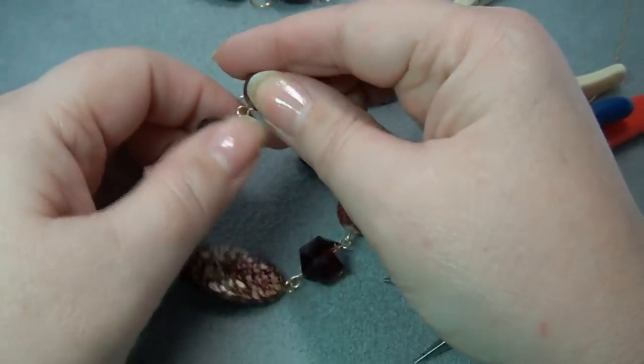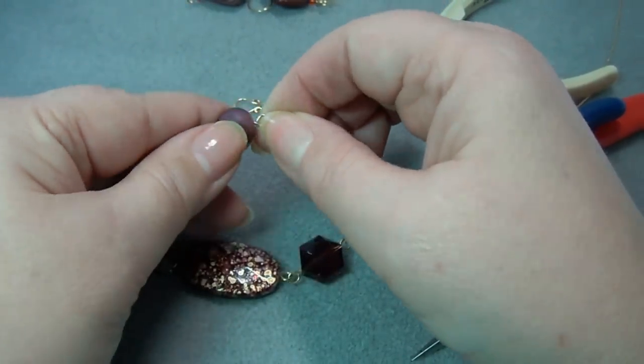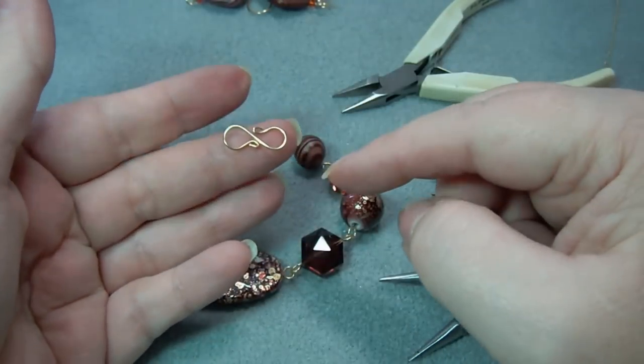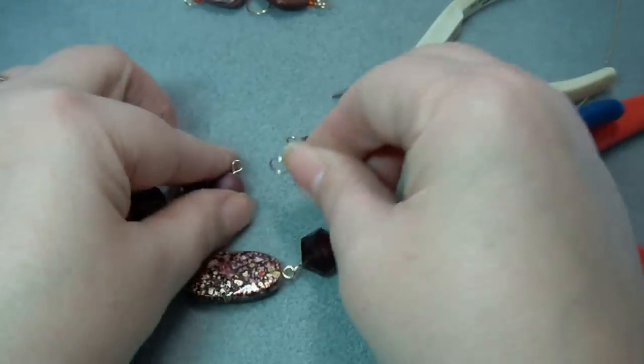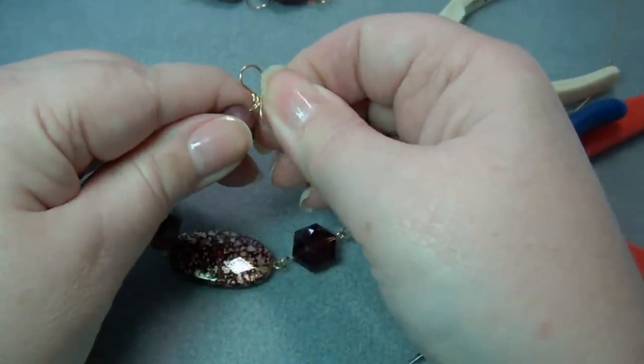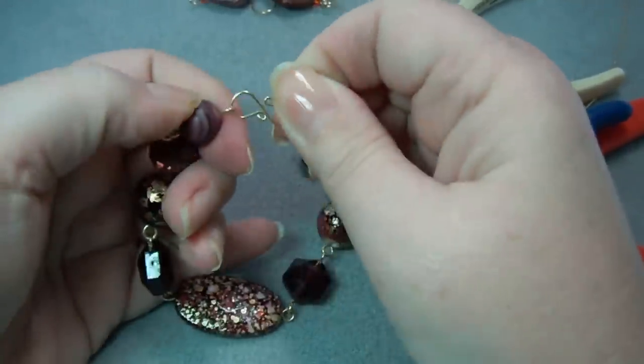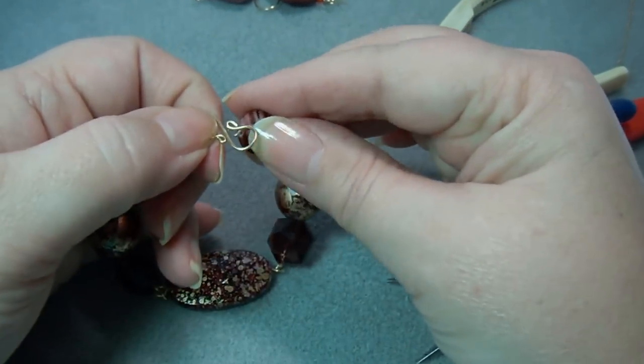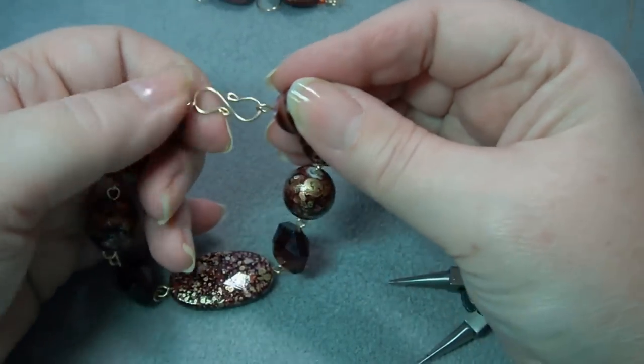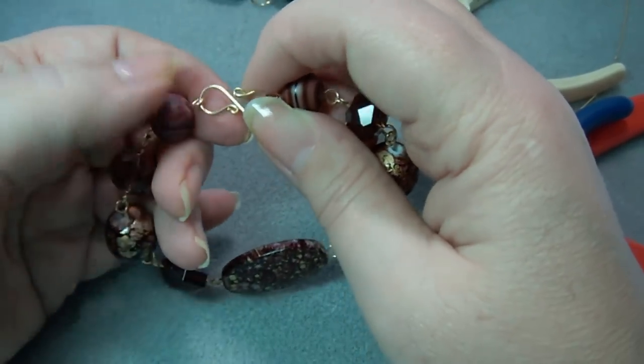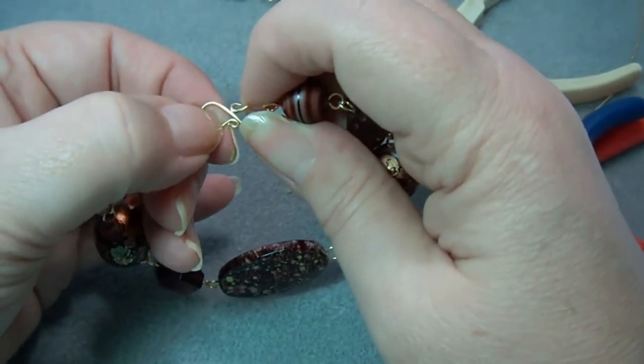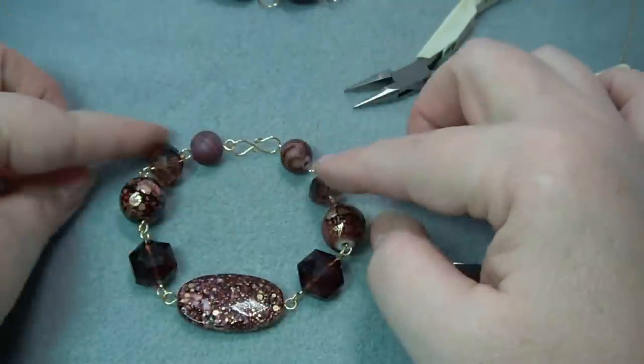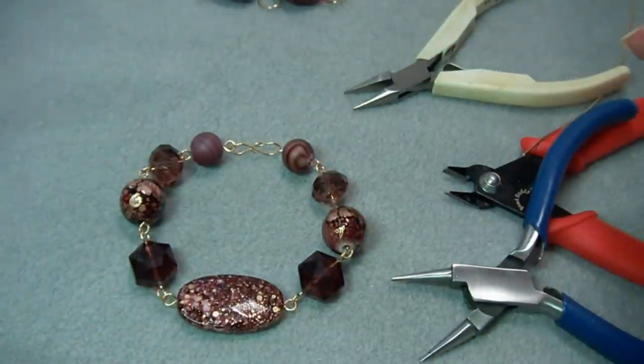Once you've got all the beads on the bracelet, you want to put on the clasp. I have a simple S clasp and I'll probably put together a tutorial on how to make this. What we'll want to do is slip one end of the clasp into one of the loops at the end. Then to put it all together, slip it through the other one. You can tighten up the loop a little bit by squishing it together a bit. But that's it. That's all that's needed for this simple loop bracelet.